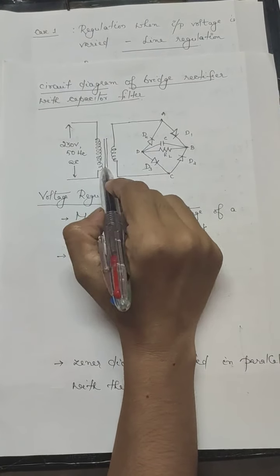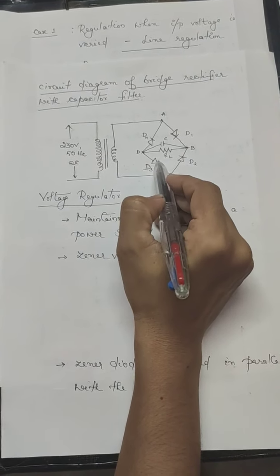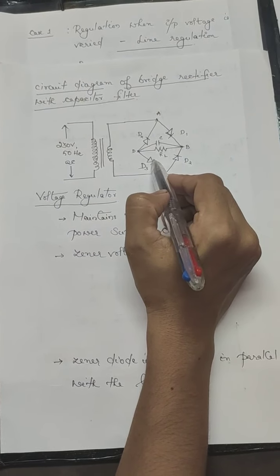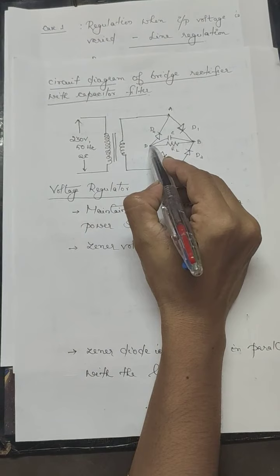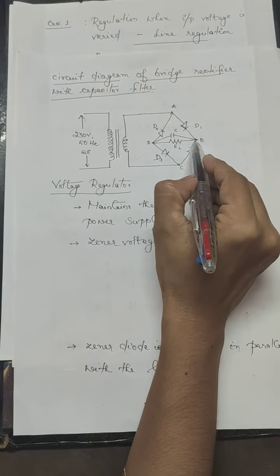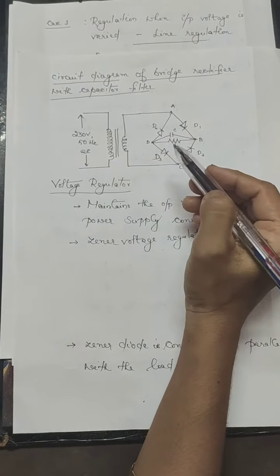This is a circuit diagram of a bridge rectifier with a capacitor filter. We can see that the capacitor filter, the shunt capacitor filter is connected in parallel across the load resistor.